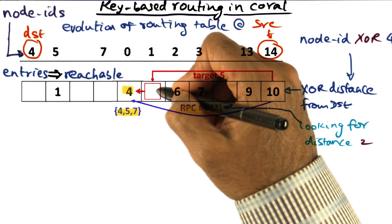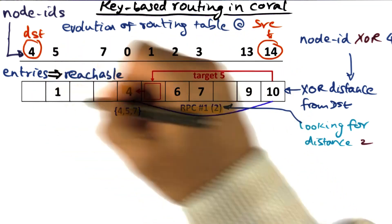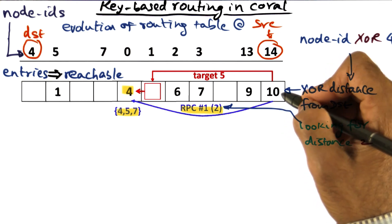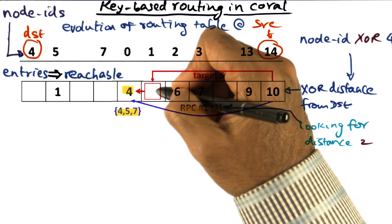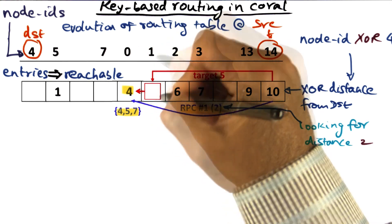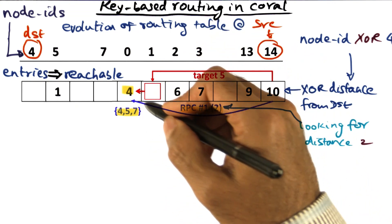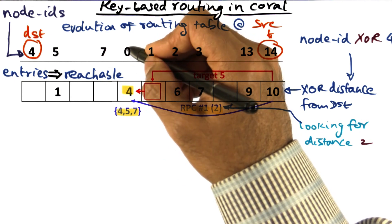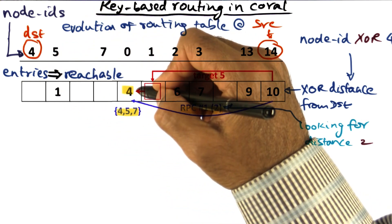Unfortunately, I don't have a direct way of reaching node one because I don't have that entry in my routing table. Therefore, I'm going to go to a node that is approximately half the distance. I could have gone to either two or zero, close to the desired half-the-distance metric, but to make forward progress towards the desired destination, I'll go to this node who is four distant from the desired destination.